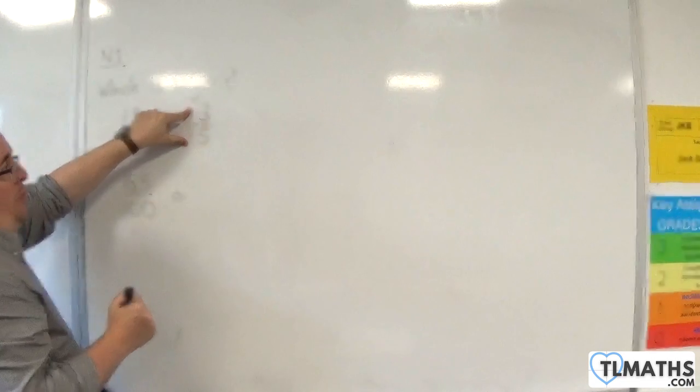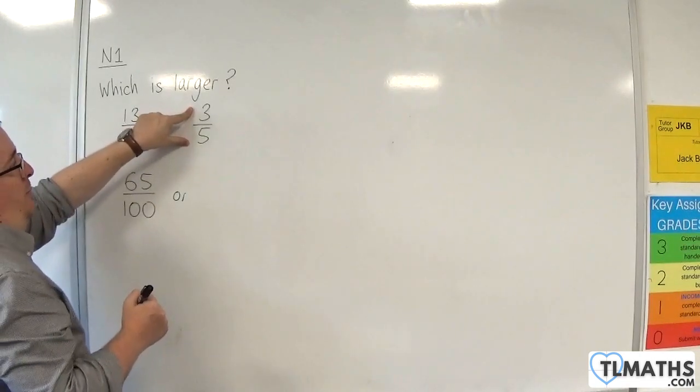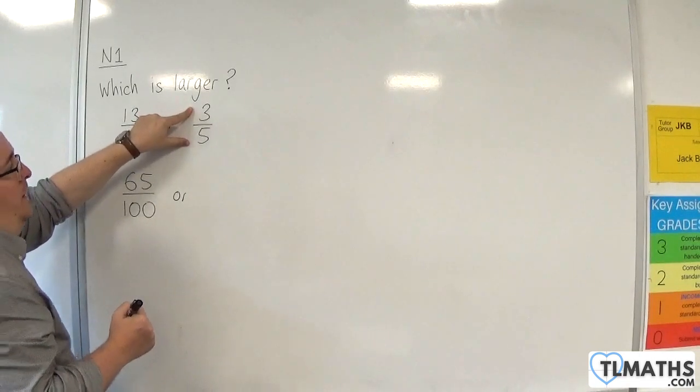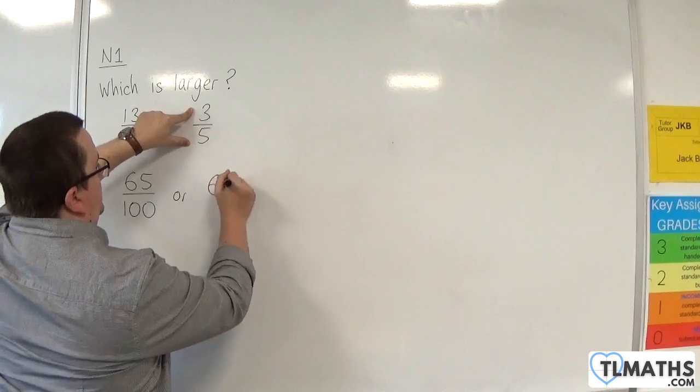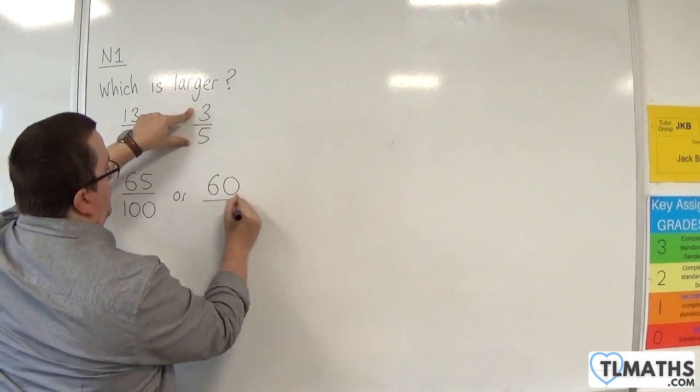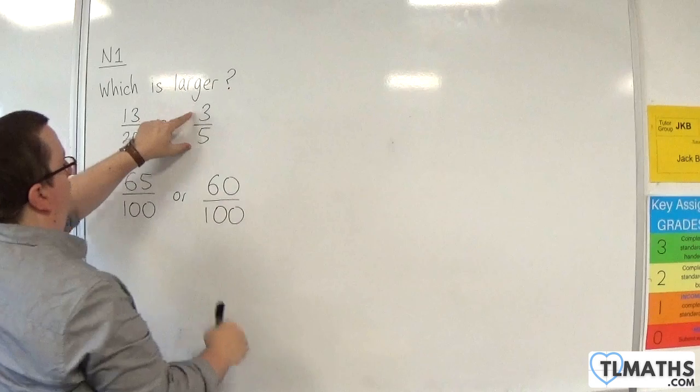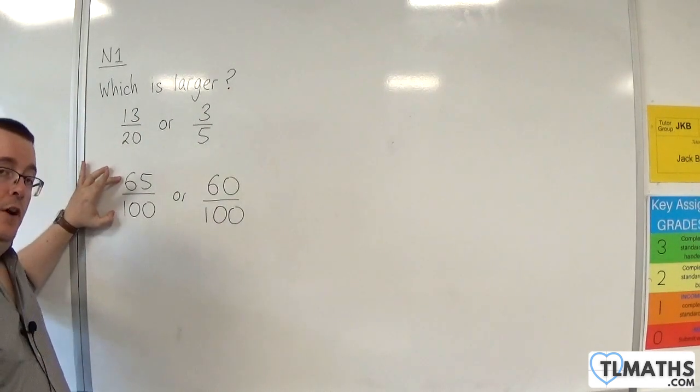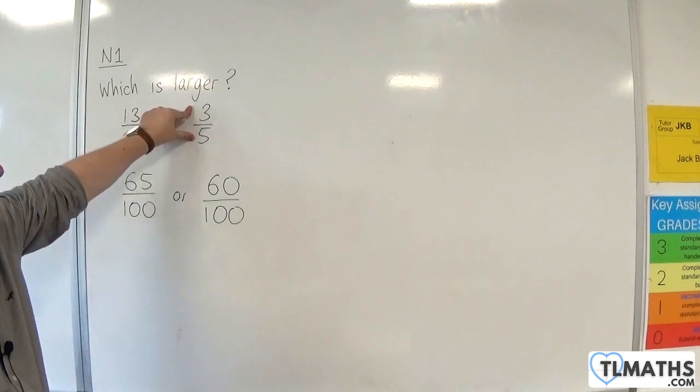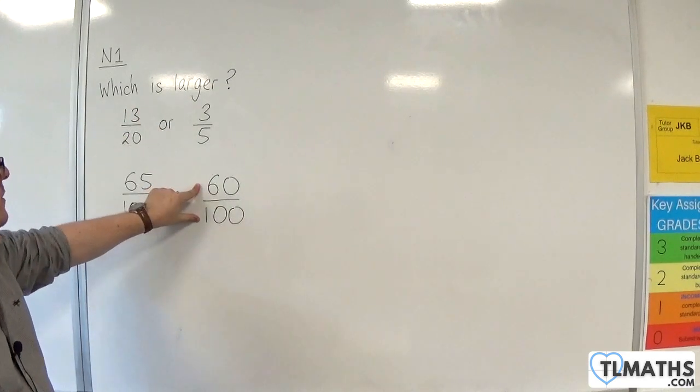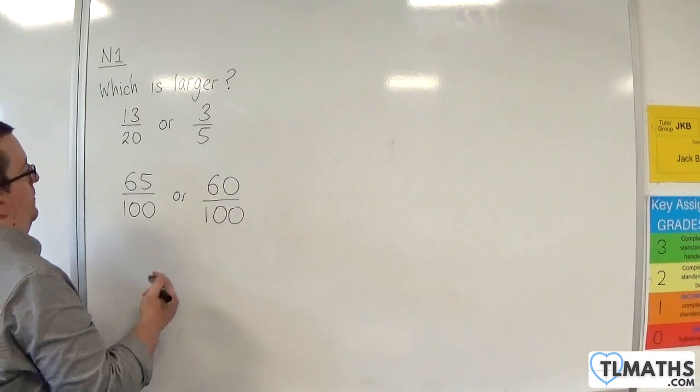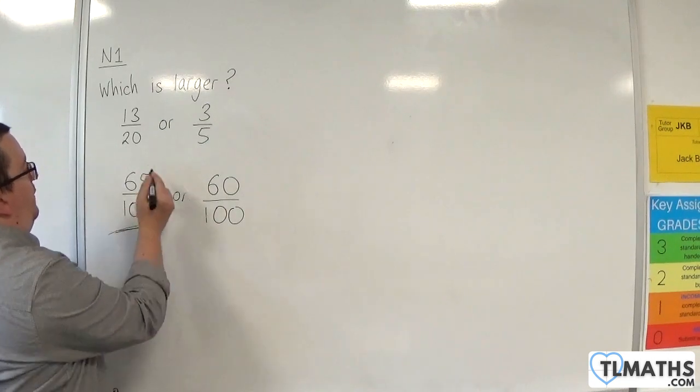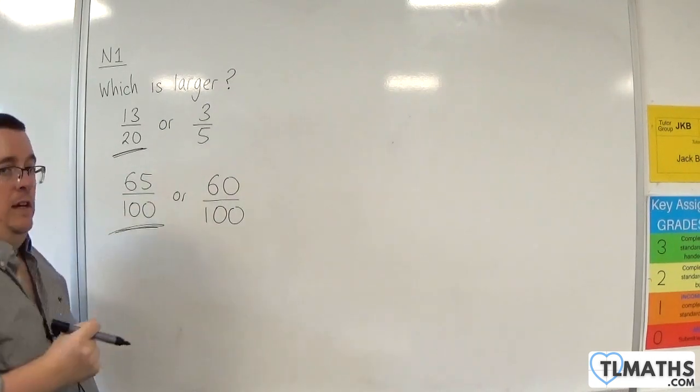Now, I multiply 3 over 5, top and bottom, by 20. 3 times 20 is 60. 5 times 20 is 100. So, 13 over 20 is the same as 65 over 100. 3 over 5 is the same as 60 over 100. Which is larger? Well, clearly, it's the 65 over 100. So, the 13 over 20.